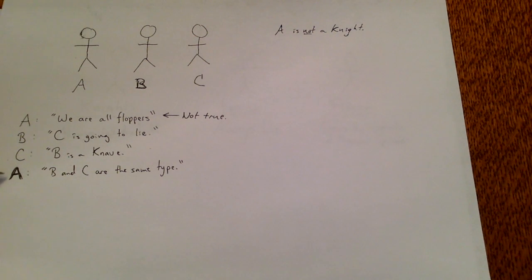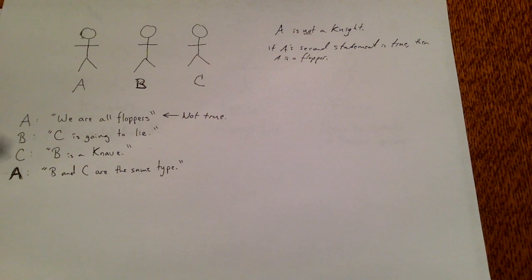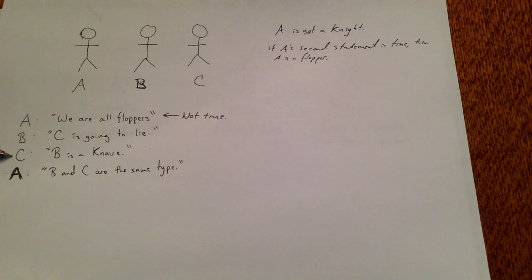Specifically, if A's second statement is true, then A is a flopper, and B and C are the same type — so either both knights, both knaves, or both floppers. They can't both be floppers because we know all three cannot be floppers. If they're both knaves, then C would be telling the truth, but C would not be telling the truth as a knave. If they're both knights, then C would be lying. Therefore, this case cannot happen.